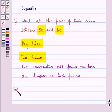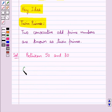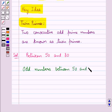Let's see the solution now. We need to find the pairs of twin primes between 50 and 80. First of all, let's see the odd numbers between 50 and 80.